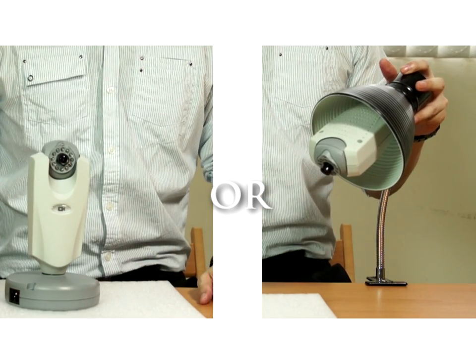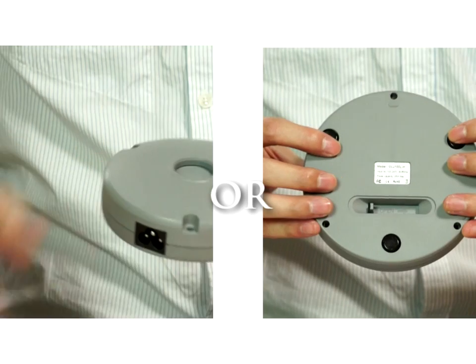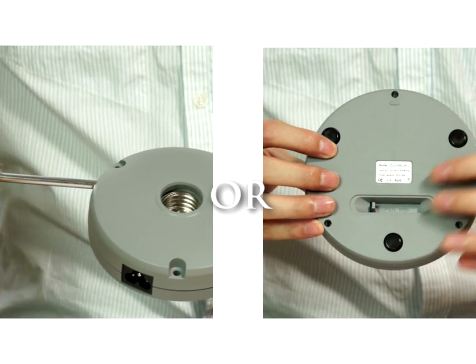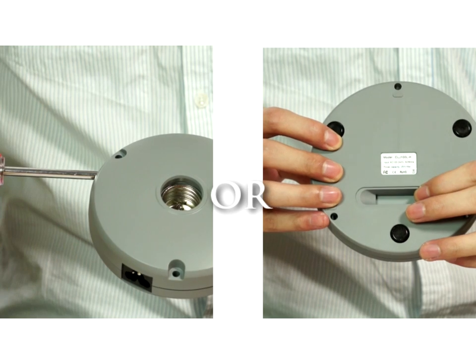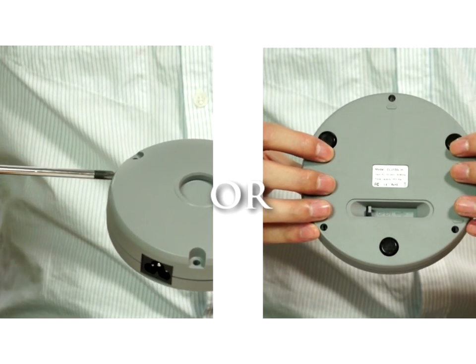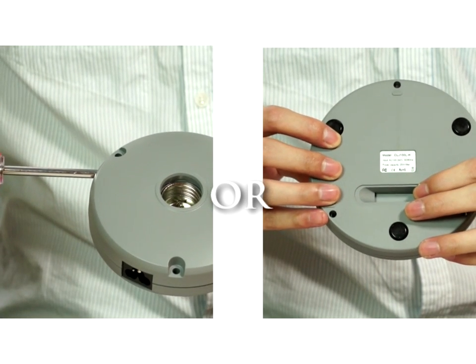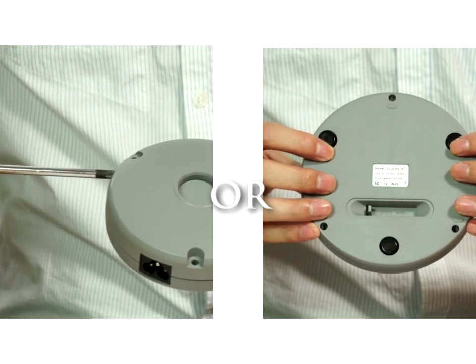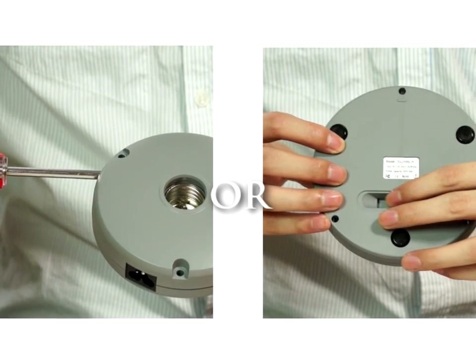The product base is included in the package. Product base has a safety mechanism cover. To open the cover, turn over the base, push the bar aside, or look for a pen-sized hole at the edge of the base. Use a screwdriver or similar diameter tool to push the cover aside.